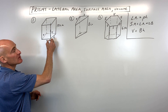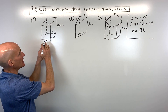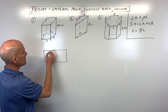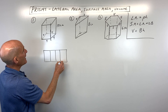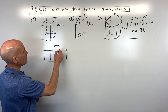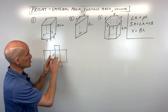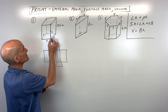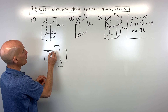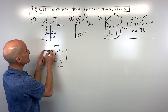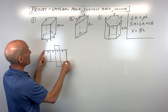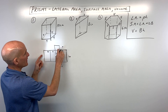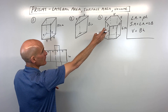If you take scissors and cut the edge of this box and unfold it, you'd get a rectangle, plus a top square and a bottom square. This lateral area is the perimeter of the base — see how that's 16: 4, 4, 4, and 4 — times the height, which is 10. That gives us the area of this rectangle, like length times width. That's where the formula comes from.